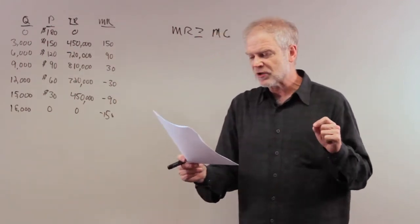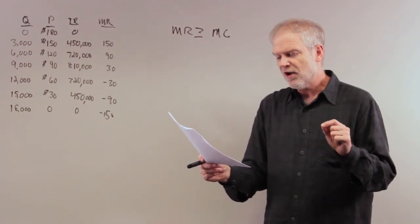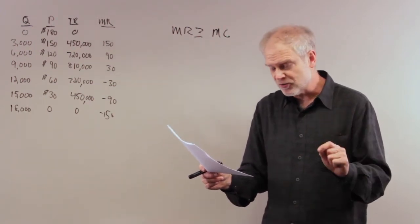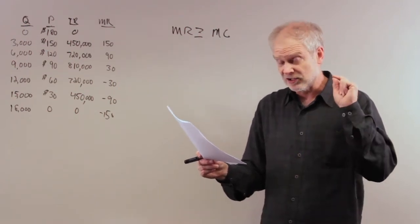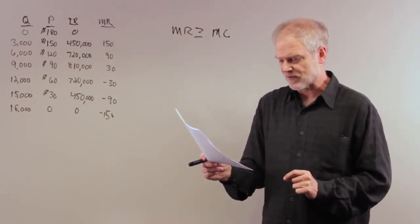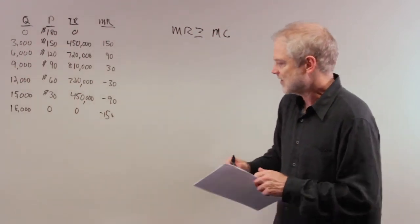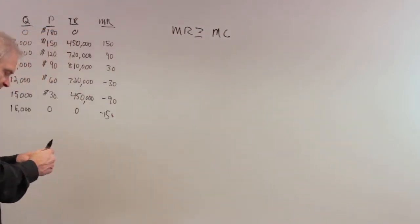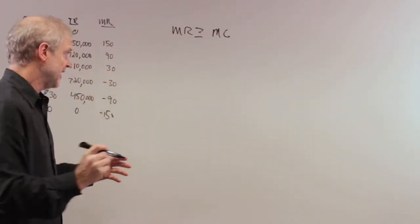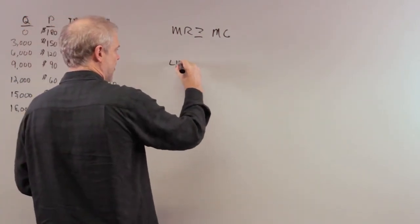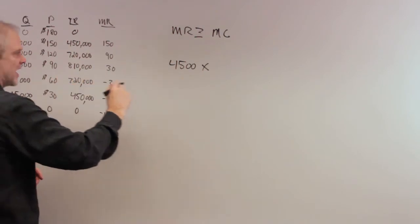Question three assumes two profit-maximizing digital cable TV companies that can collude on the quantity of subscriptions sold and the price charged. How much profit will each earn? They're colluding and dividing the subscribers in half. Each firm has 4,500 subscribers and charges $90.